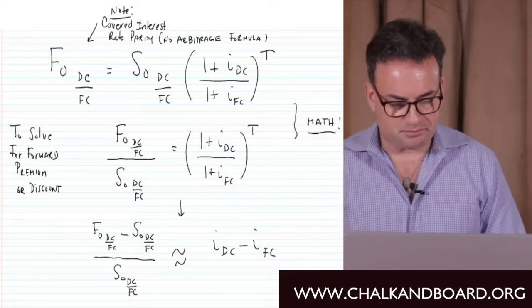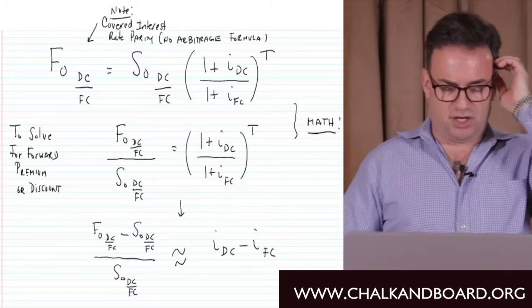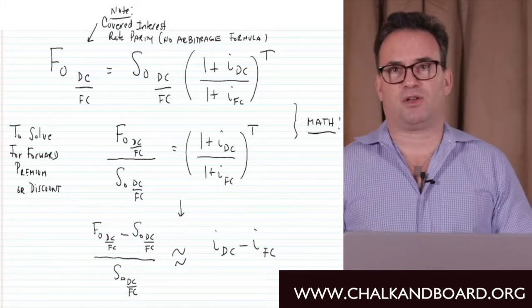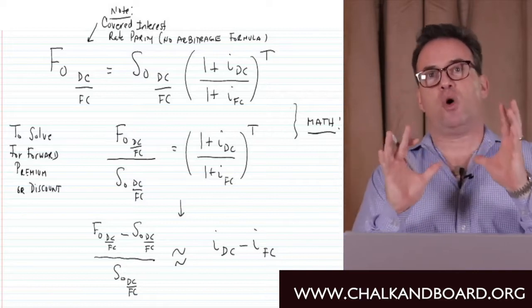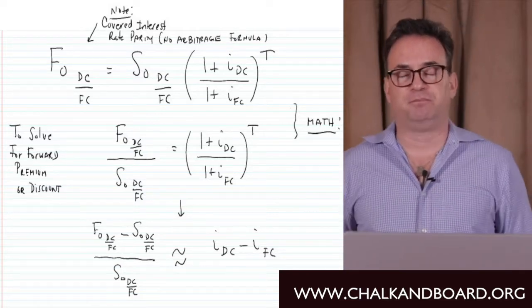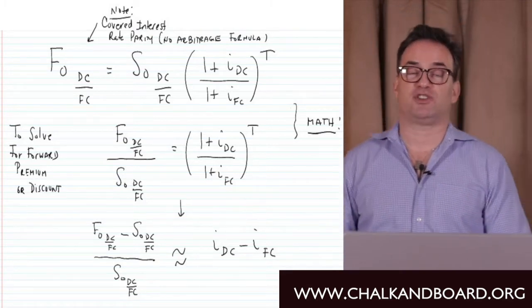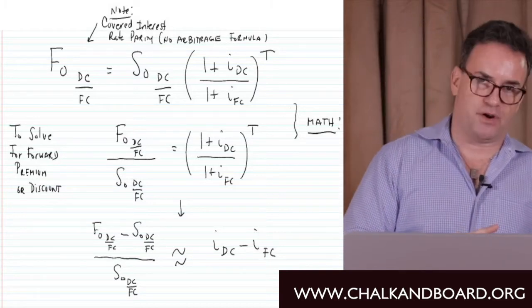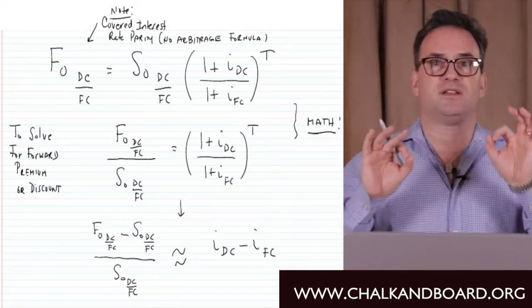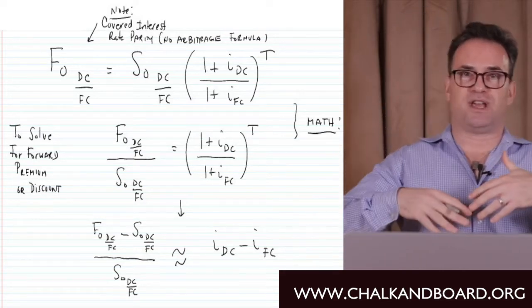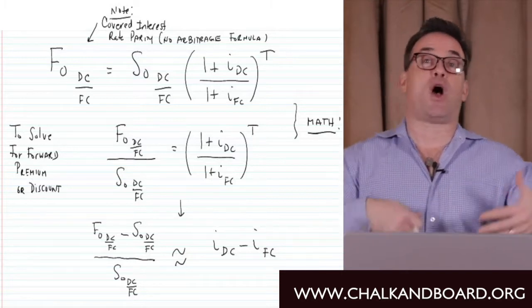This is the more precise methodology. The premium or discount can be derived from this formula. When the curriculum initially shows it, they just say it's forward minus spot. But to calculate forward premiums or discounts as a percentage, we manipulate this formula. This no-arbitrage formula for the currency exchange rate market is called covered interest rate parity — we'll distinguish it later from uncovered interest rate parity and the foreign exchange carry trade. Basically, if there's any disequilibrium or potential arbitrage opportunity, it can be eliminated because futures or forward contracts are available. That's why we say the forward is equal to the spot.